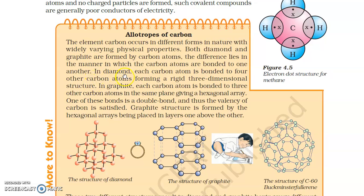In diamond, each carbon atom is bonded to four other carbon atoms, forming a rigid three-dimensional structure. So in diamond, each carbon atom bonds to four other carbon atoms in a rigid, unchanging three-dimensional structure.